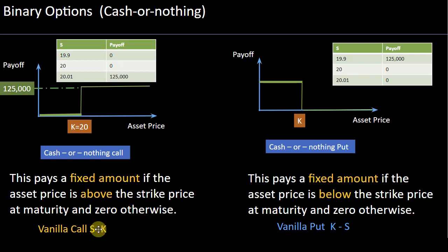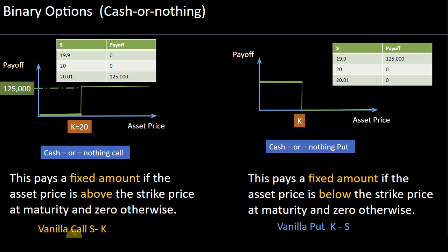If you took a long position on a cash-or-nothing call in a particular stock, let's assume the strike price is $20 and the payoff is $125,000. A call option only gives a positive payoff at maturity if your underlying is above the strike. So if your underlying is $20.01 at maturity, you receive the positive payoff of $125,000.